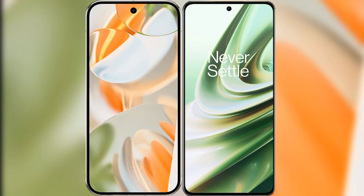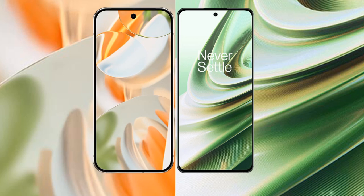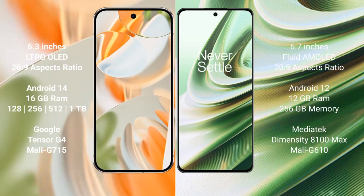We will compare the new Google Pixel 9 Pro with OnePlus 10R. Google Pixel 9 Pro features a 6.3-inch LTPO LED display and Snapdragon 8 Gen 3, while the OnePlus 10R features a 6.7-inch flat AMOLED display and Snapdragon 8 Gen 3.